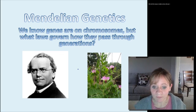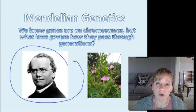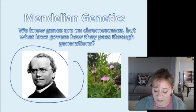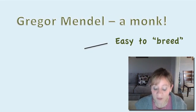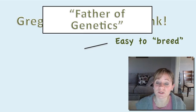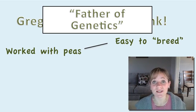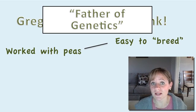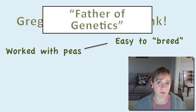What laws govern that? The scientist we're really going to look at today is a guy named Gregor Mendel. He was actually a monk who studied garden peas, and we call him the father of genetics because of all the amazing things he did with his work on peas. One of the reasons he used garden peas was that they were really easy to breed — he could self-fertilize them, he could easily fertilize them with each other, and they had a short generation time so he was able to quickly see what the generations looked like.